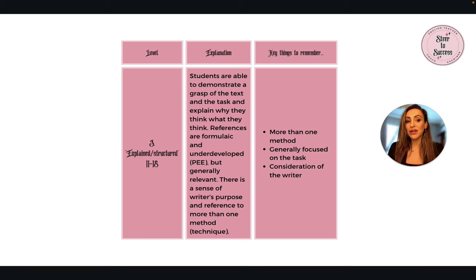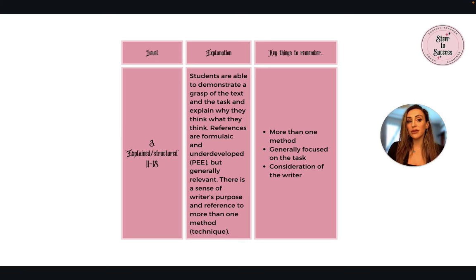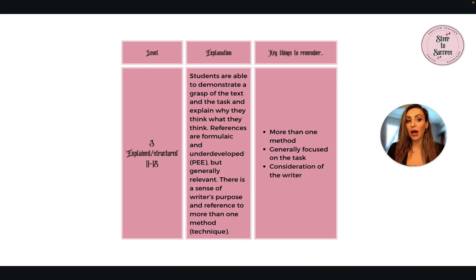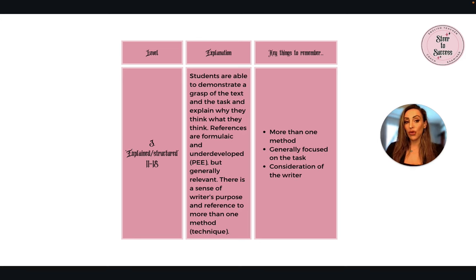My point with making this video is to show you that in order to push into level four, five, and six — where we're moving towards grades five, six, seven, eight, and nine — there's quite a lot required of you. You need to remember these things when your teachers have been telling you to talk about the writer and think about the impact on the reader. It's about thinking about the text having an impact on the reader, thinking about more than one method, and consideration of the writer.